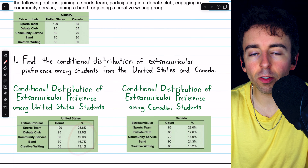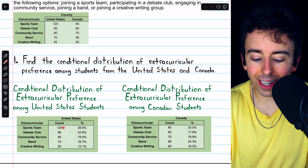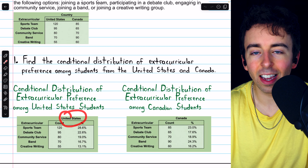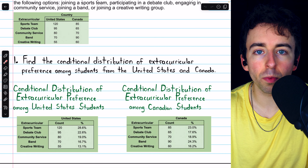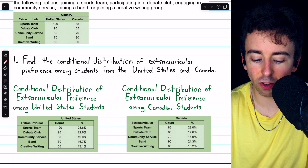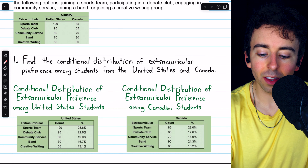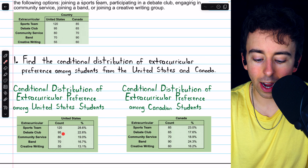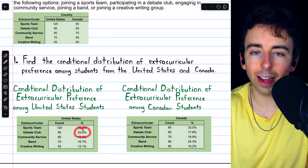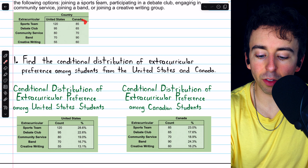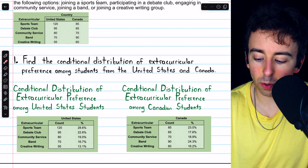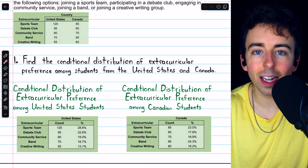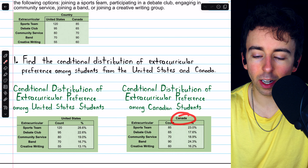To calculate these percentages for the conditional distribution, we have to divide the counts by the total number of people in the United States, since we're looking at the distribution of extracurricular preferences among those who satisfy the condition of being United States students. The total number of United States students is 420, so 95 divided by 420 gives us 22.6%. On the other hand, there are 370 Canadian students, so we divide those counts by 370.